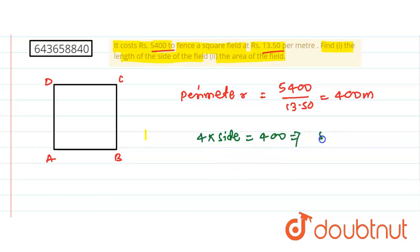So divide by 4. So after dividing by 4 we get side is equal to 100 meters. So the length of the side of the square field is 100 meters.